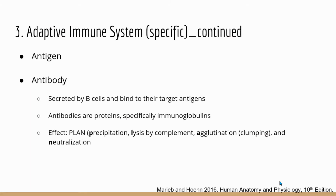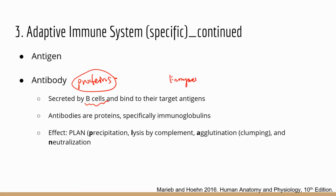I want to introduce a couple of key terms. First, antigens are substances that can stimulate our adaptive defenses — they're essentially the targets of all adaptive immune responses. Antigens could be whole bacterial cells or protein structures on the surface of a virus — anything that can mobilize the adaptive defense. Antibodies are proteins, secreted by B cells. The antibodies can bind antigens in a very specific relationship, similar to enzymes and their substrate.